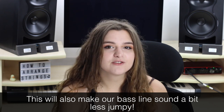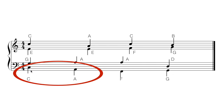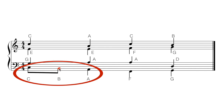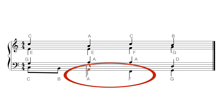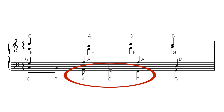The first opportunity I see for a passing note is in the bass line. There's a nice gap between the C and the A where I could put in a B — and B is a note of the key. Then looking back at the score, there's another opportunity between the A and the F to put in a G. Now that's a lot more interesting than it was, but all the interest is in the bass line — the cello's getting all the fun.